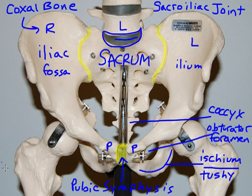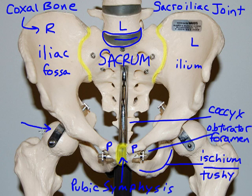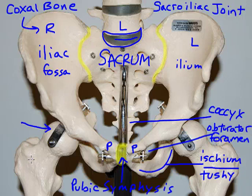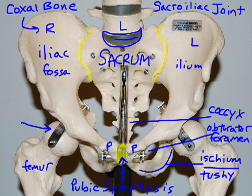We'll examine the ball and socket joint of the hip joint, which is formed by the head of the femur as it articulates with the coxal bone. We'll look more at the femur in a separate screencast, and we'll continue with a closer look at the coxal bones next.